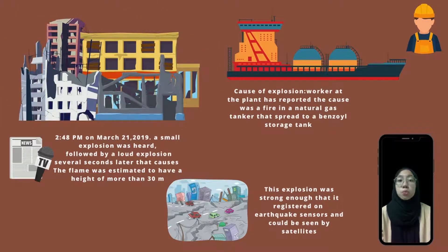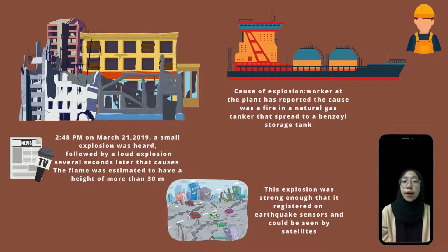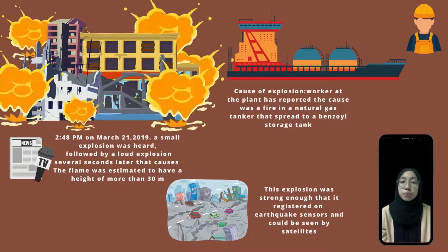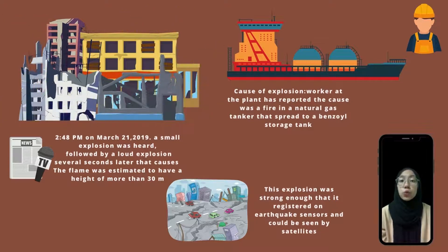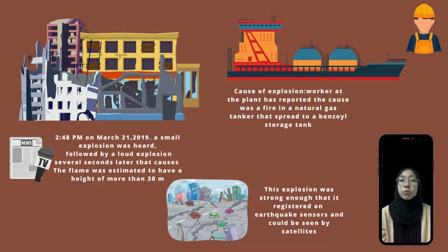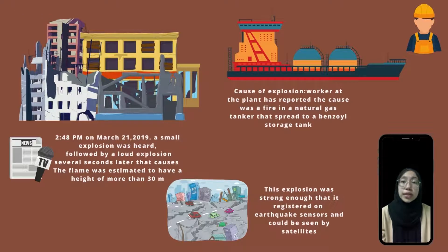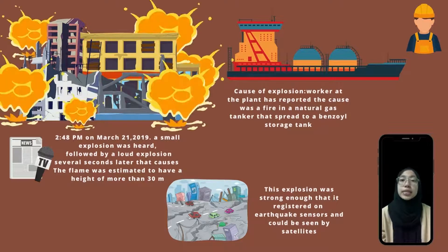The small explosion was followed by a series of larger explosions. The fire was estimated to have a height of more than 30 metres. The plant and surroundings within a radius of 500 metres were destroyed in the explosion and fire. A magnitude 2.2 tremor with a focal depth of 0 km, accompanied by the energy of more than 2 tonnes of TNT, was detected by the National Seismology network. The huge blast wave caused significant human and material loss. This explosion was strong enough to be registered on earthquake sensors and could be seen by satellites.